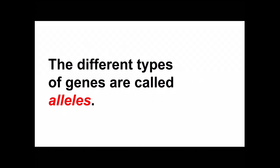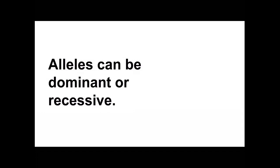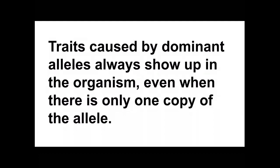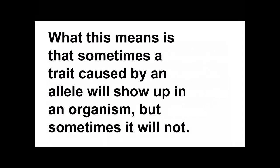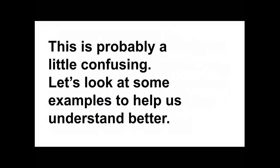The different types of genes that a person has are called alleles. Alleles can be dominant or recessive, and this affects which one shows up. Traits caused by dominant alleles always show up in the organism even if there's only one copy. Traits caused by a recessive allele can only show up if there are two copies of that allele. So sometimes a trait shows up, and sometimes it doesn't.